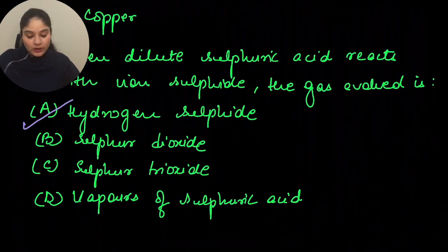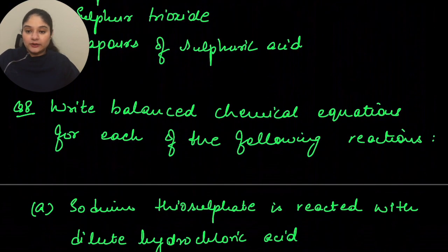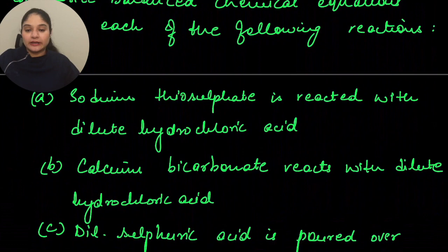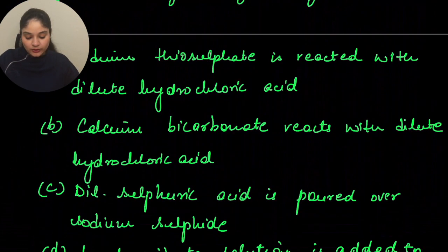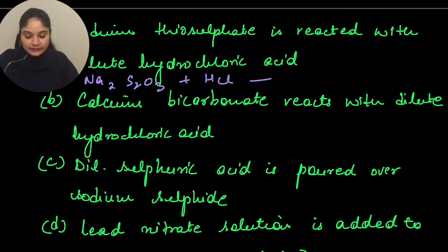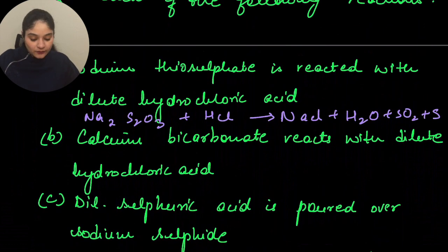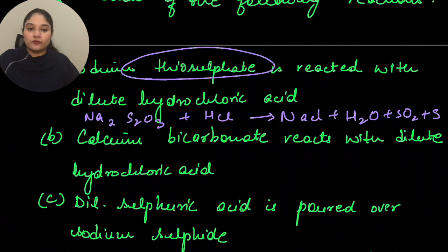Eighth question: write balanced chemical equations for each of the following. Sodium thiosulfate reacted with dilute hydrochloric acid: Na₂S₂O₃ + HCl gives NaCl + H₂O + SO₂ + S. This equation is commonly asked because, unlike regular sulfates, thiosulfate produces sulfur — a yellow precipitate.